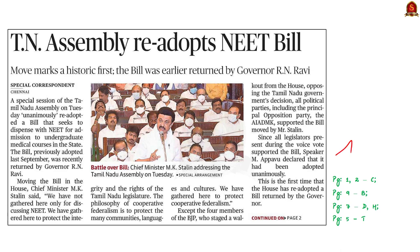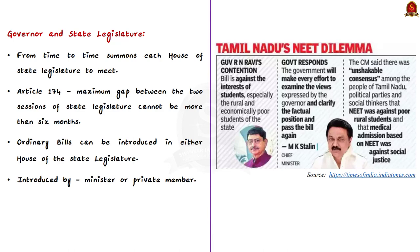In this context, we will learn about the relationship between the state legislature and the Governor in terms of ordinary bills. The Governor from time to time summons each house of the state legislature to meet. Article 174 of the constitution states that the minimum gap between two sessions of the state legislature cannot be more than six months — that is, the state legislature should meet at least twice a year.